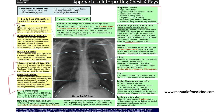95% of the time, unilateral hilar enlargement suggests an underlying malignancy. Looking at the heart, the normal cardiothoracic ratio is less than 0.5 of the entire thoracic dimension. If it's more than 0.5, there is cardiomegaly on a PA film.